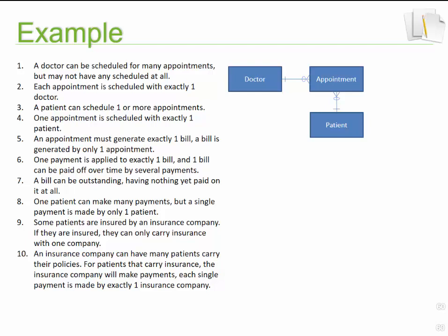Step number five: an appointment must generate exactly one bill, and a bill is generated by one appointment. At this stage we know appointment is an entity, but now we find there's a bill — so we might need to record information about the bill as well, meaning bill is another entity. An appointment must generate one bill — it's required — and a bill is generated by one appointment. So that's a one-to-one relationship, required on both sides.